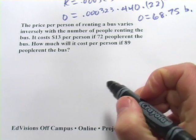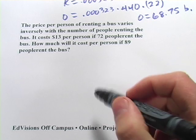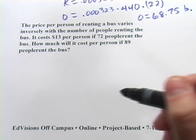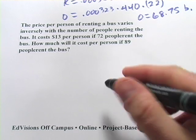This one says, the price per person of renting a bus varies inversely with the number of people renting the bus. So what that means is the more people you have, the less the cost is going to be, which makes sense.